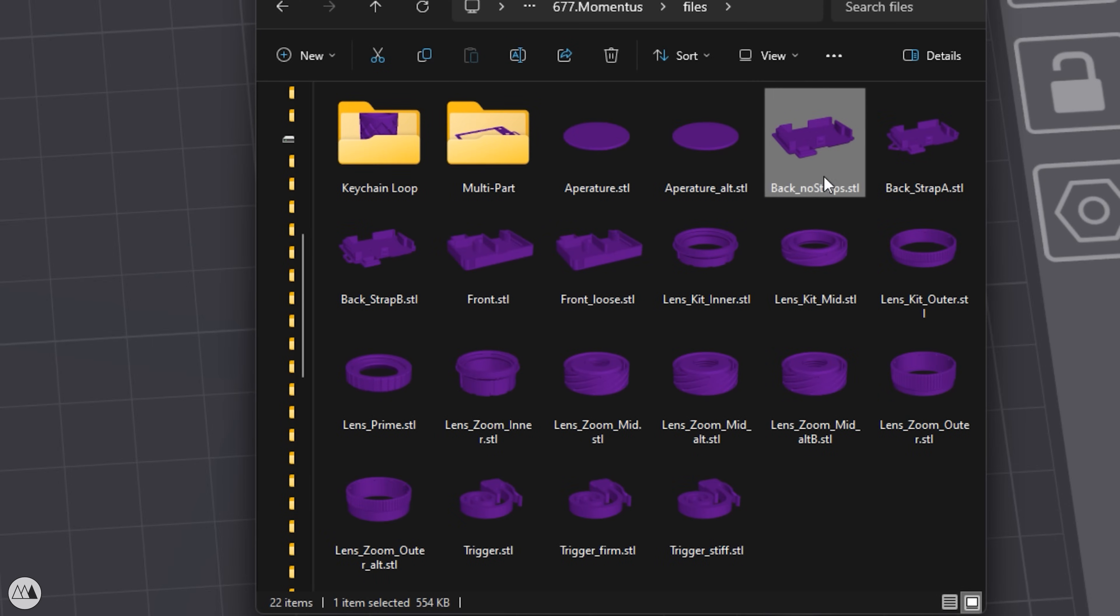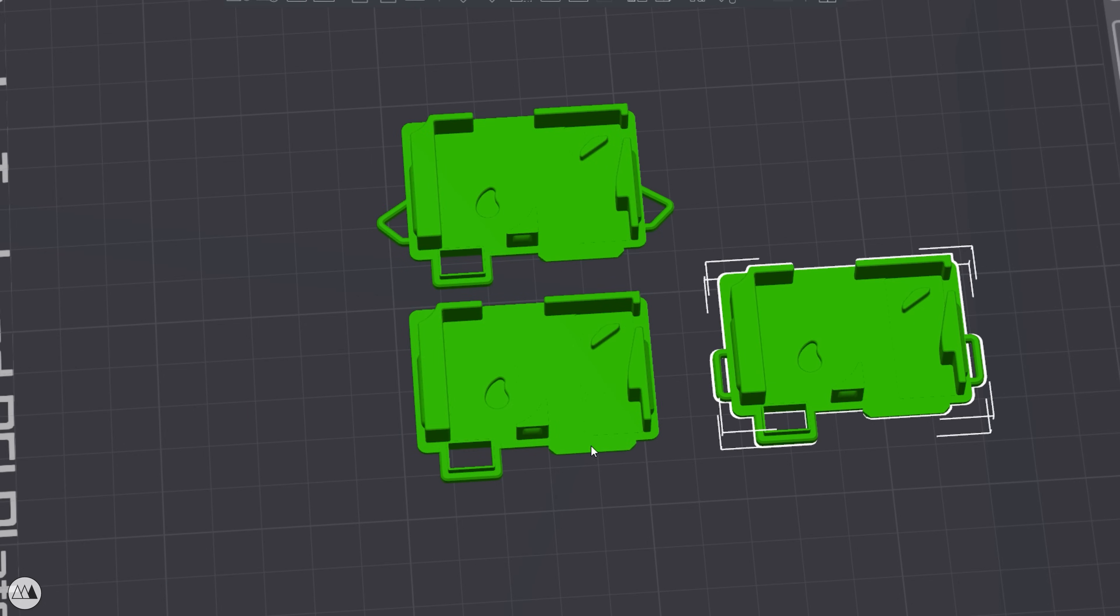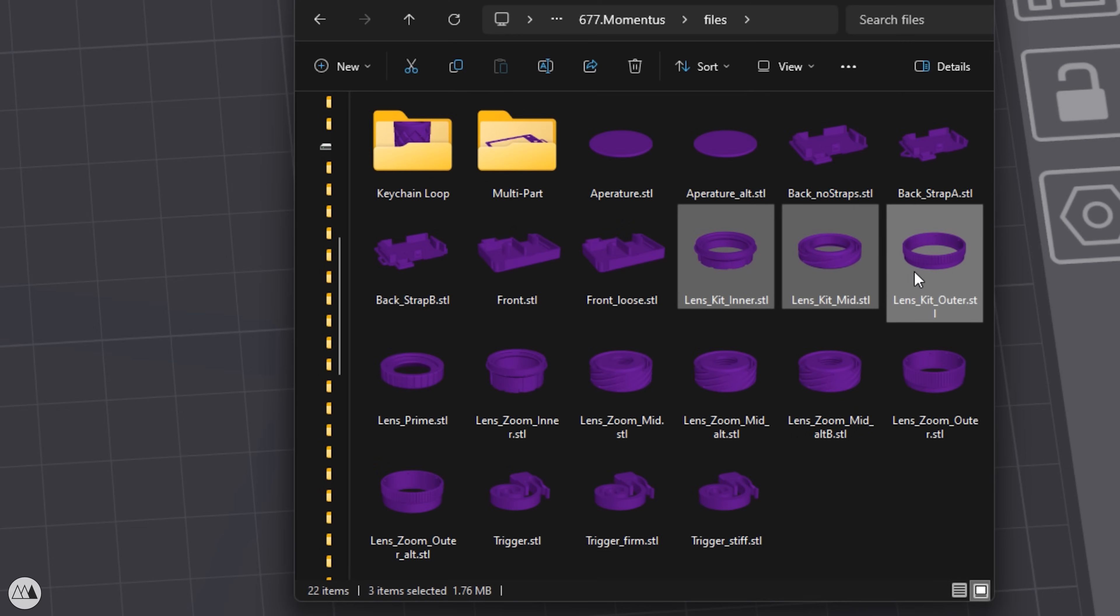There are also a few different back parts, depending on whether you want strap connections or not, things like that. Some of the lenses are made of multiple parts as well.